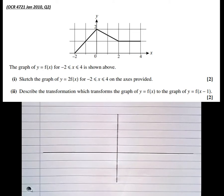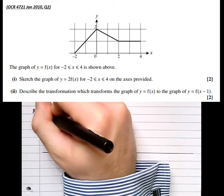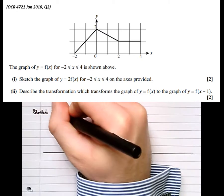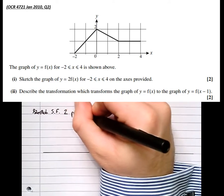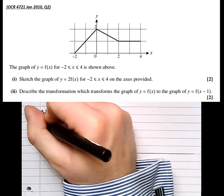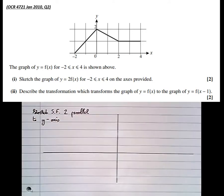So we can see it's been multiplied by 2 on the outside. So just making some notes on this. It's a stretch, scale factor 2, parallel to y axis. We can see that because it's been times by 2 on the outside and outside transformations do what they say they're going to do to the y values. So every y value is going to be times by 2.